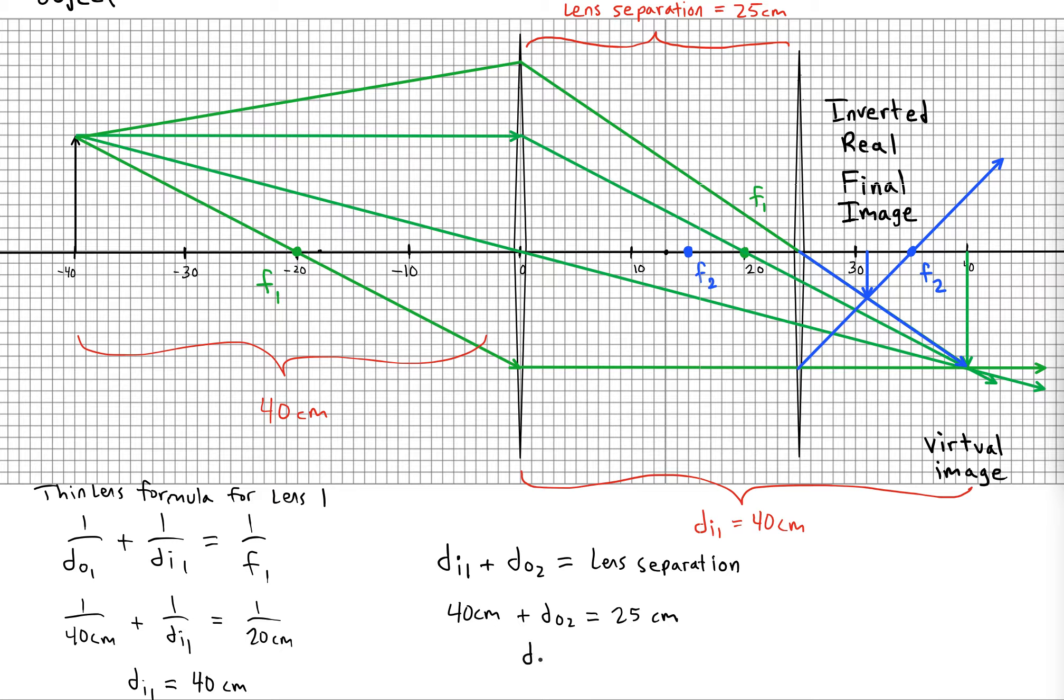Then we'll see an interesting result. The object distance becomes negative, and that's actually what we need. When a virtual image ends up on the opposite side of lens 2 as the original object, then we have to use a negative object distance in that case.